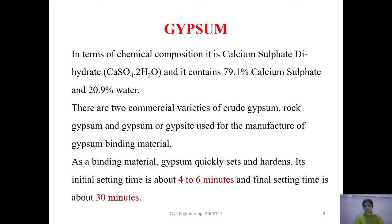CaSO4 is Calcium Sulphate and H2O is water. Gypsum contains 79.1% of calcium sulphate and 20.9% of water. There are two commercial varieties of crude gypsum: rock gypsum and gypsite, which are used in the manufacture of gypsum binding material.